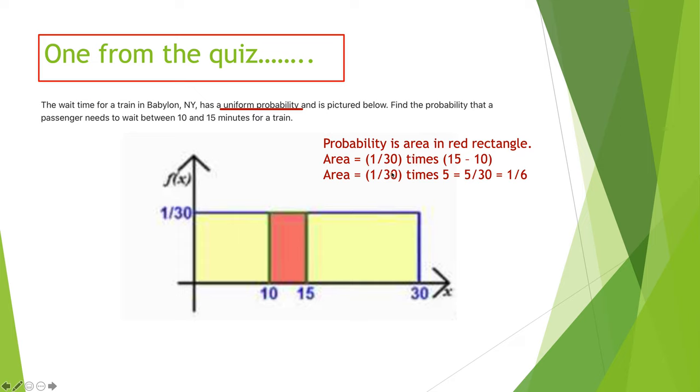Probability is the area in the red rectangle. So the area is going to be 1/30th, because that's the width, times... Now we're only doing the red rectangle, because we don't want the piece that goes from 0 to 30. If we did that, it would be 1. And that makes sense, because in a uniform distribution, the probabilities all add up to 1. In this case, we want to only do the area of the red rectangle. So that's 1/30th, because that is the width, times the length is going to be 15 minus 10. So that's 1/30th times 5, which is 5/30ths, which is 1/6th.